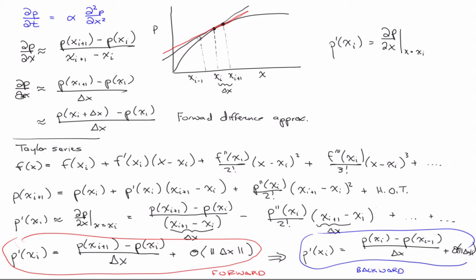But what if instead of using xi+1 or xi-1 alone, we evaluated at both xi+1 and xi-1, and approximated the tangent as the secant between those two points? That's averaged over two delta x's. Graphically, the derivative at xi would then be p at xi+1 minus p at xi-1, all over two delta x. That's the central difference approximation, and the question is: what is the error associated with that?